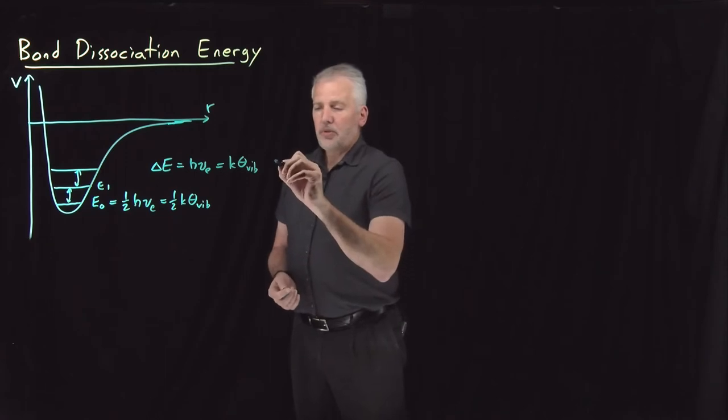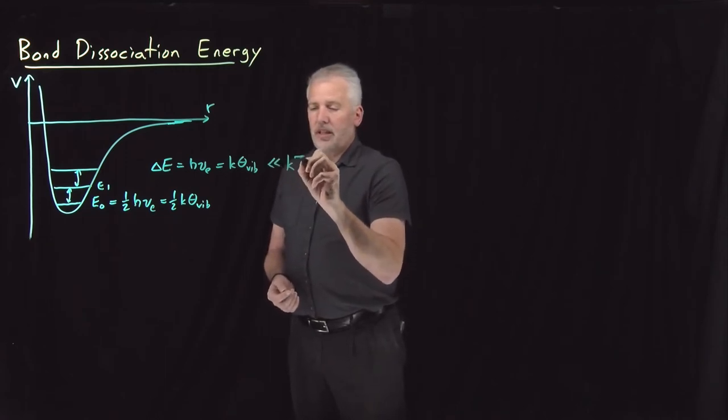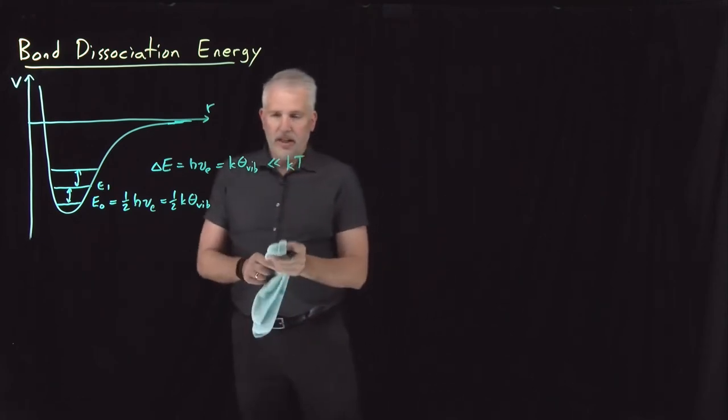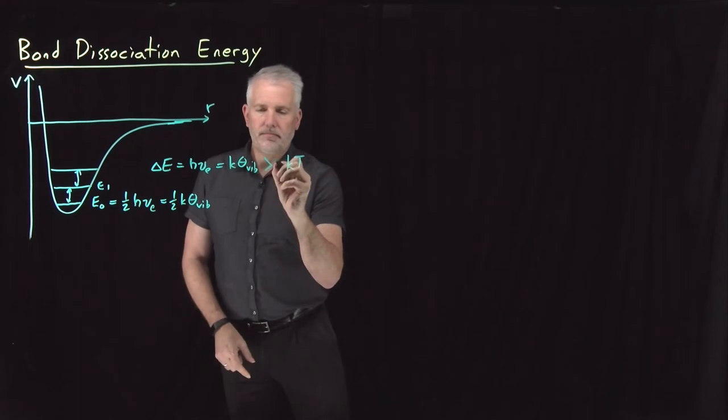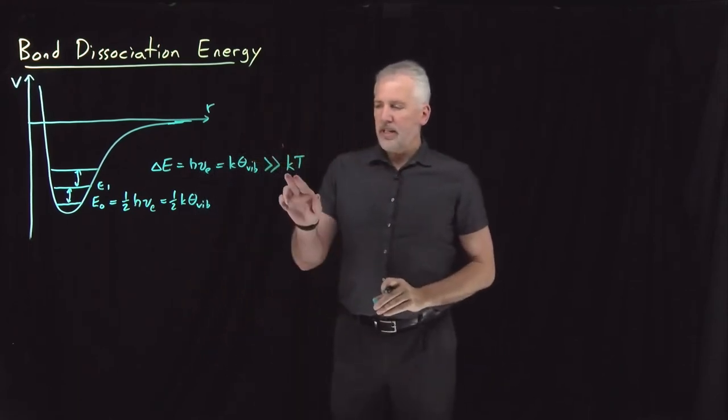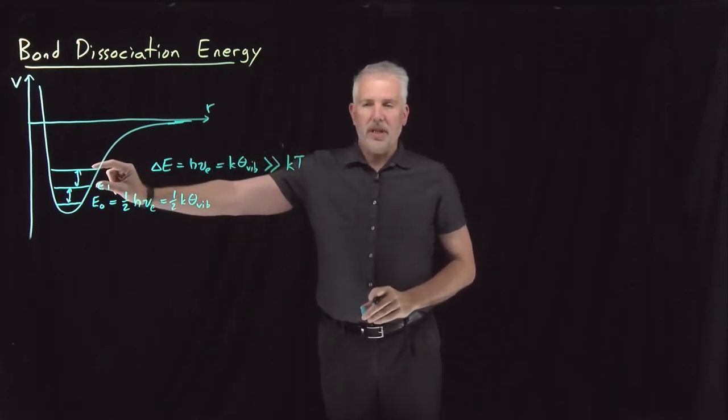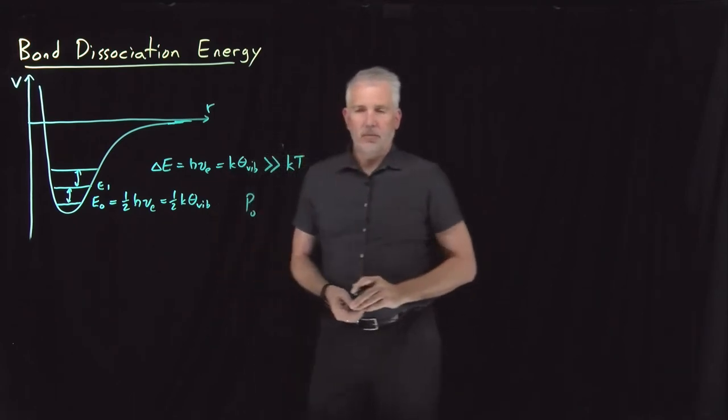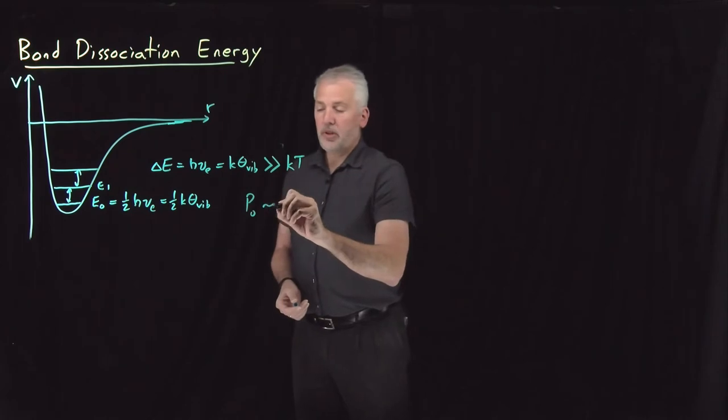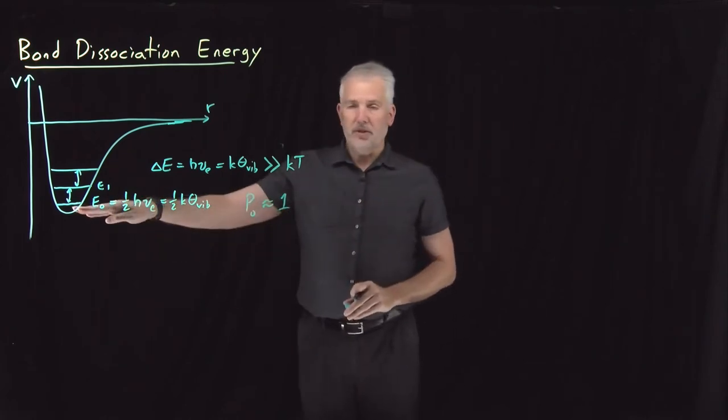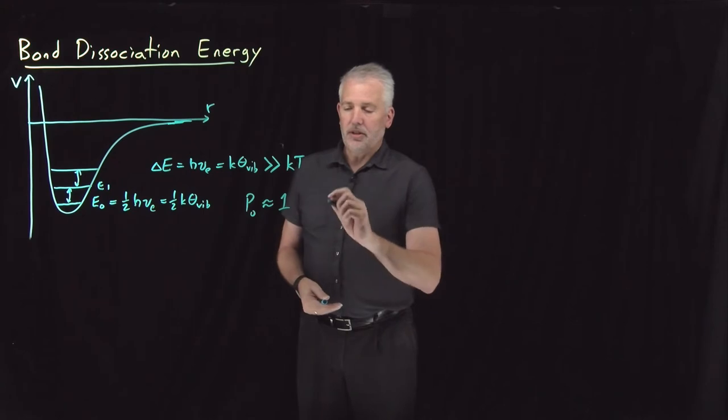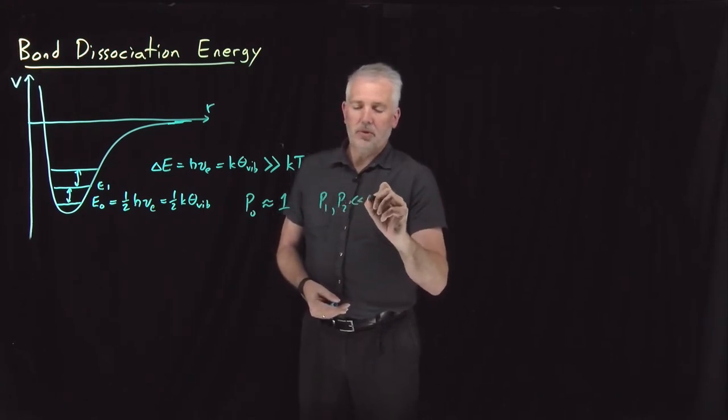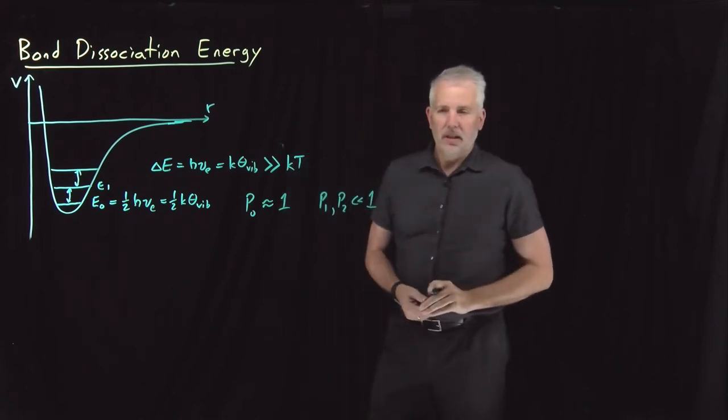For our purposes right now, it's enough to understand that that difference between energies is much greater than KT. KT is quite small compared to this difference in energies, which means that the population of the ground state, at room temperature anyway, is pretty close to 100%. Almost all the molecules live in the ground state. A very small fraction live in the excited state. Those populations are all significantly less than one.